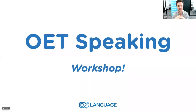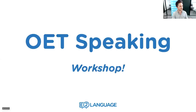Hello everybody, my name is Jay, I'm one of the expert OET teachers here at E2 Language. Today we're going to do an OET speaking workshop. We're going to look at the most important aspect of speaking, which is the scoring criteria — what the examiners use when they're marking your speaking. Everything you do has to be aimed at that criteria. If you're not communicating in a specific way according to the criteria, you will lose points.